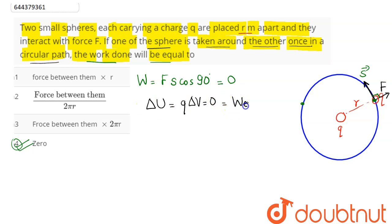Change in potential energy is the work done by external force, which will also be equal to 0. Hence work done will be 0.